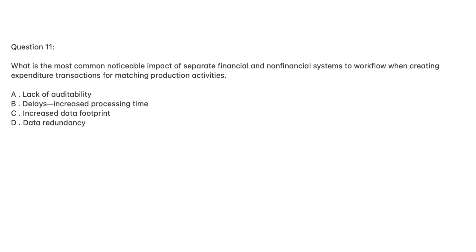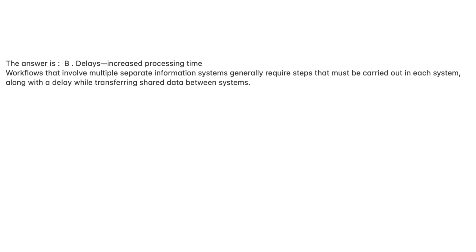Question 11. What is the most common noticeable impact of separate financial and non-financial systems to workflow when creating expenditure transactions for matching production activities? A. Lack of auditability. B. Delays, increased processing time. C. Increased data footprint. D. Data redundancy. The answer is B, delays and increased processing time. Workflows that involve multiple separate information systems generally require steps that must be carried out in each system, along with a delay while transferring shared data between systems.